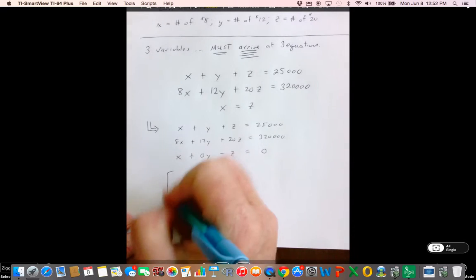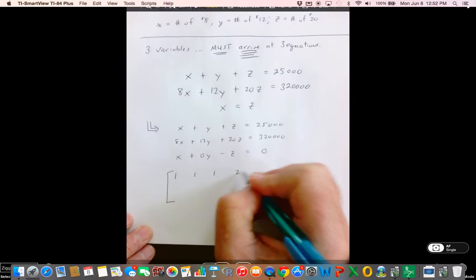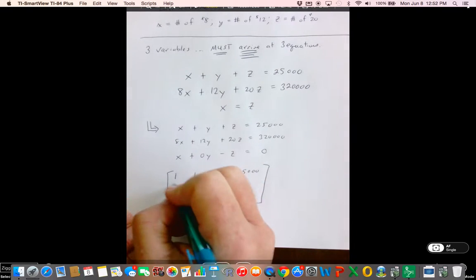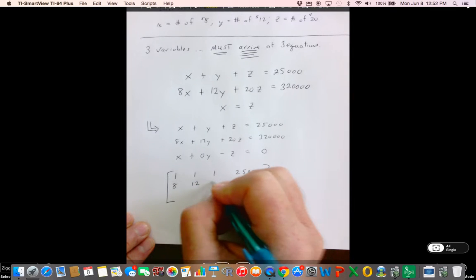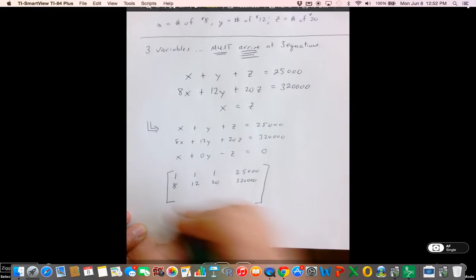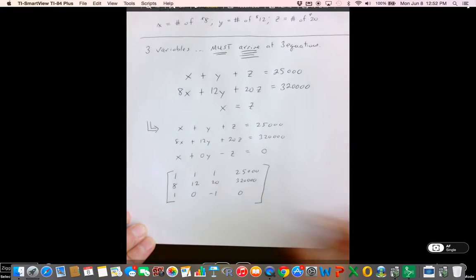So gang, my augmented matrix is going to look like 1, 1, 1, 25,000, 8, 12, 20, 320,000, and 1, 0, minus 1, 0.